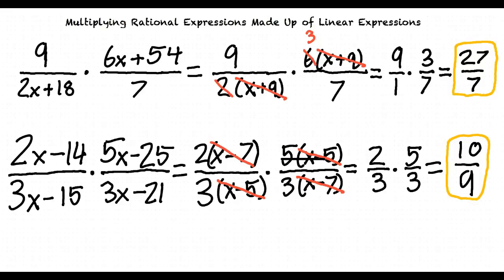Do you feel better about the problem now? Yeah, I think I got it. We start by factoring everything possible, then cancel out all the common factors, then multiply the remaining fractions together.